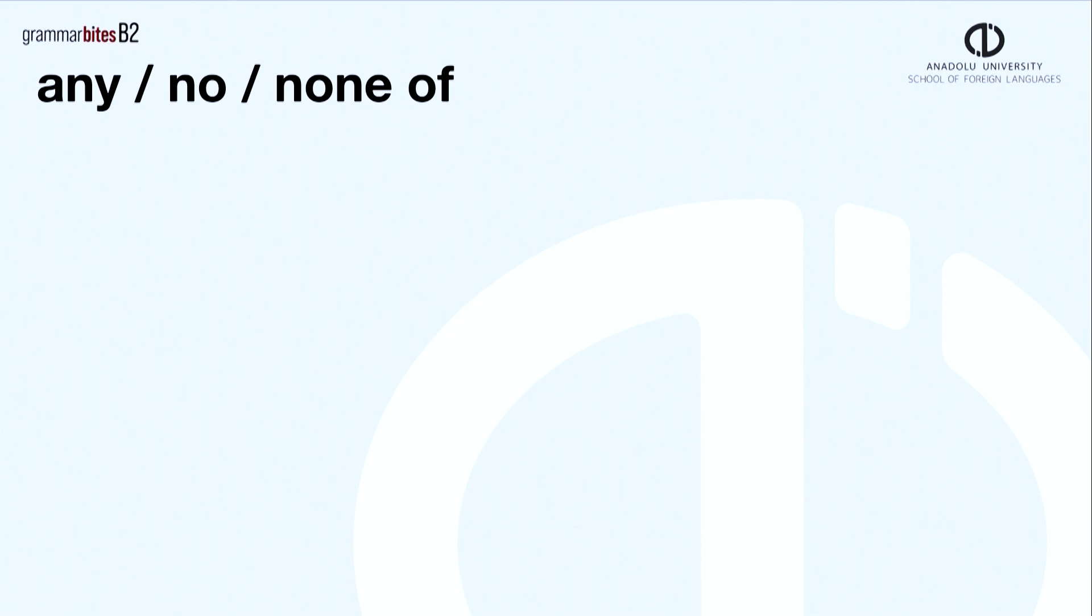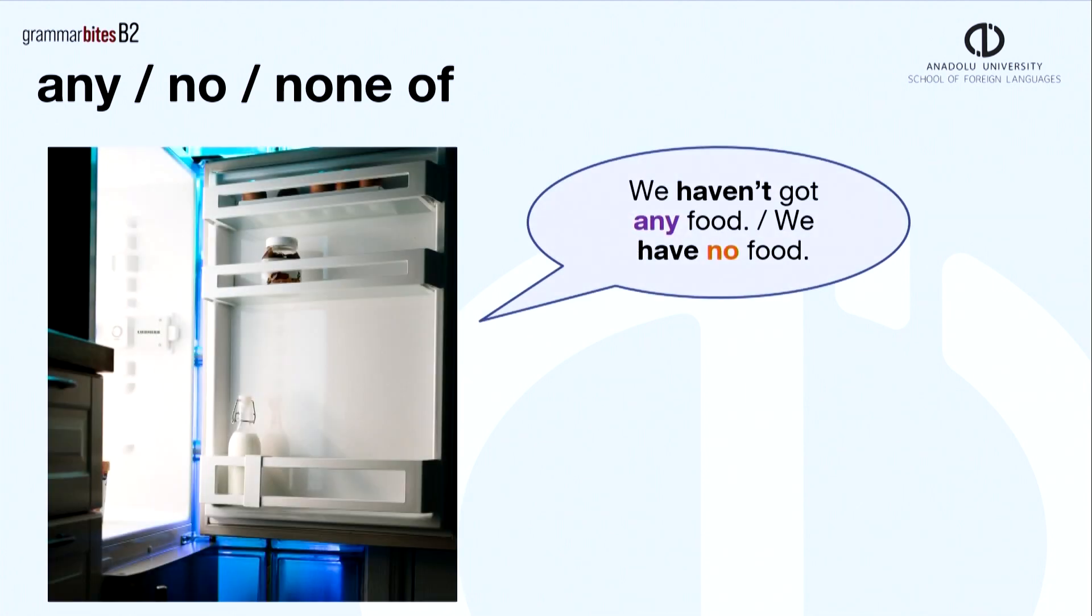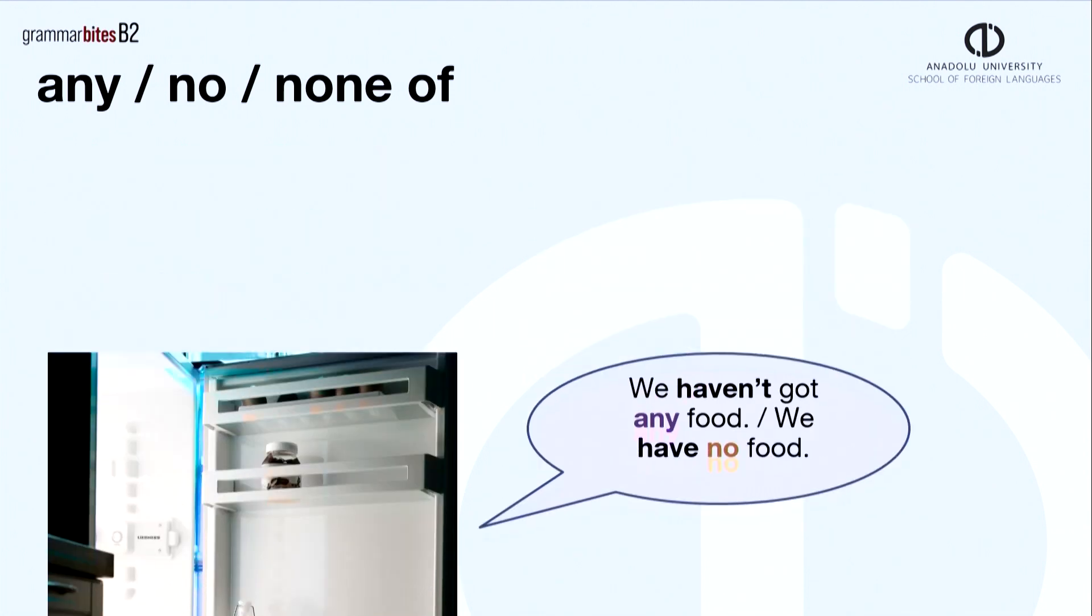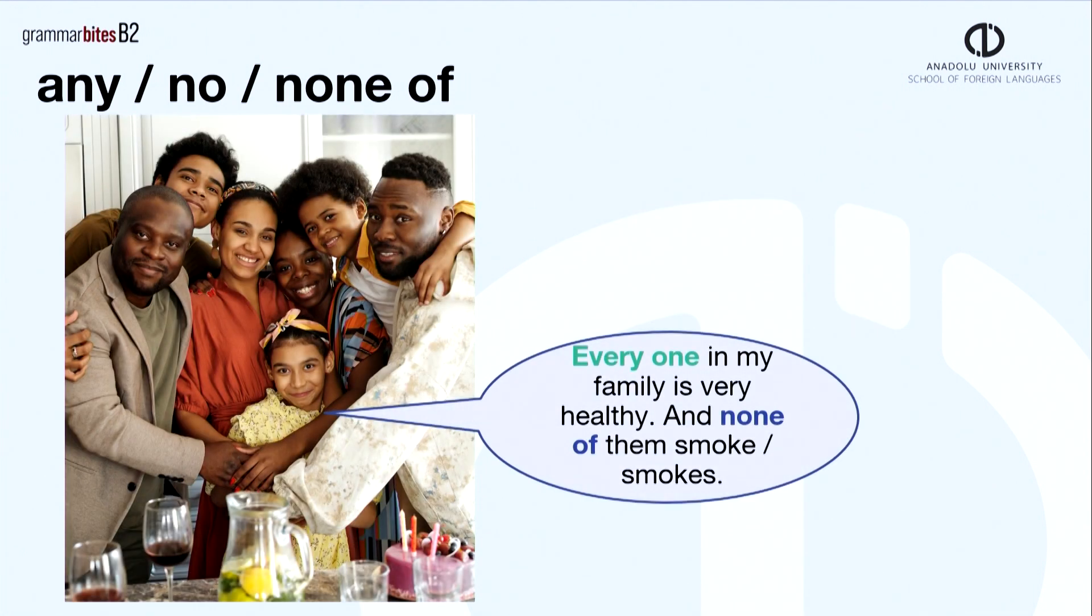Any, no and none of show zero quantity. Let's see some examples. We haven't got any food. Or we can say we have no food. Everyone in my family is very healthy. And none of them smoke or smokes.